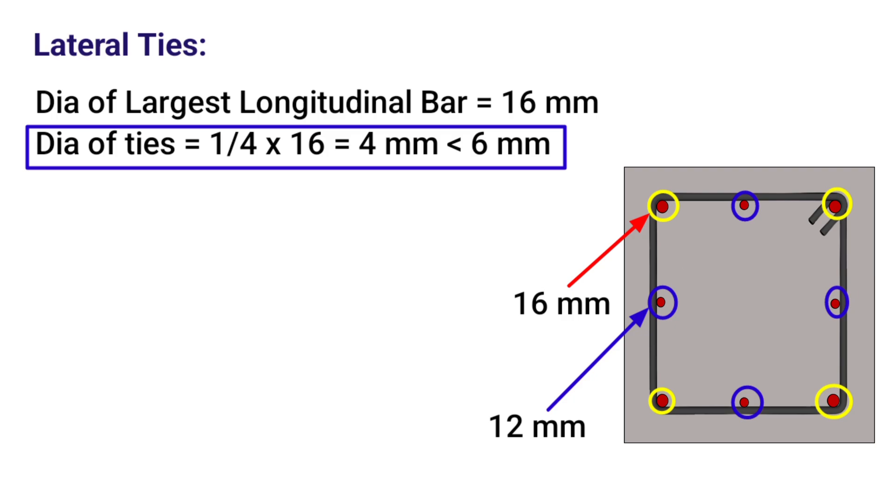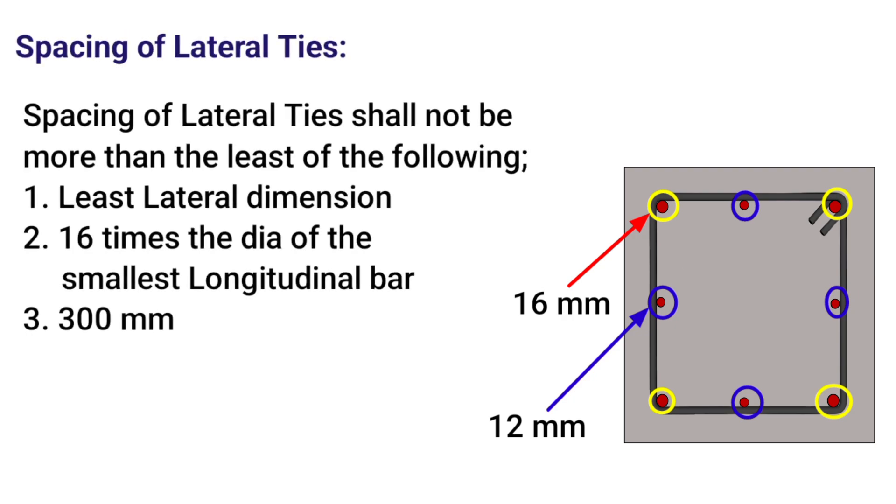Now, let's discuss what should be the maximum and minimum spacing of lateral ties. The spacing of the lateral ties shall not be more than the least value from the following three criteria. The first one is, least lateral dimension of the member. The second one, 16 times the diameter of the smallest longitudinal bar. And the third criteria, 300 mm.